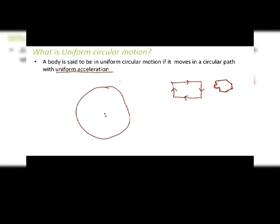So let's see what is uniform circular motion. A body is said to be in uniform circular motion if it moves in a circular path with uniform acceleration. This means the body not only moves along a circular path but also moves with uniform acceleration.